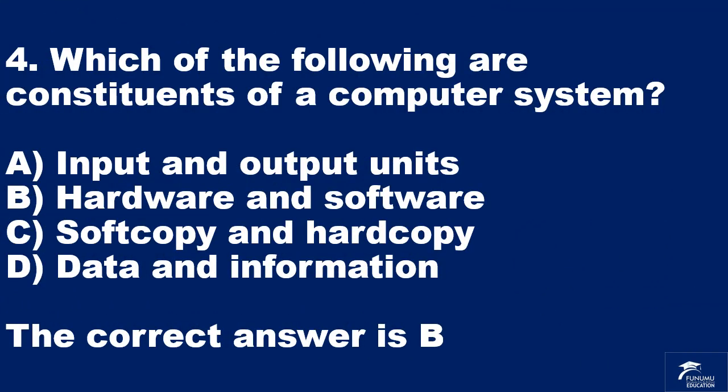Question 4. Which of the following are constituents of a computer system? A: input and output units. B: hardware and software. C: soft copy and hard copy. D: data and information. The correct answer is B.